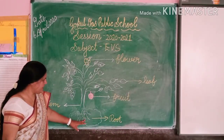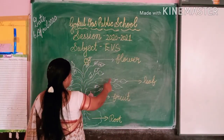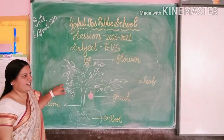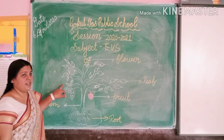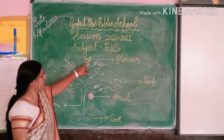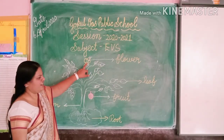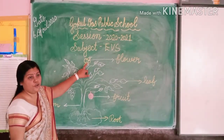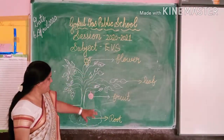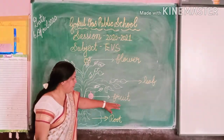This is the stem. This is the root. And these green parts which you can see are the leaves. Every plant has leaves, but the shape and size is very different. And this is the flower — flower is the best part of a plant, everybody loves flowers. And this is the fruit.